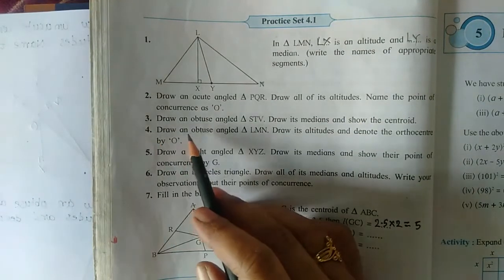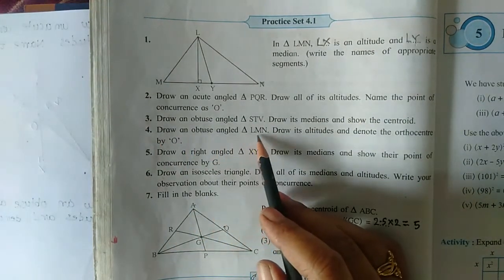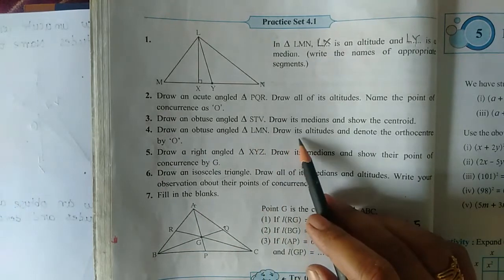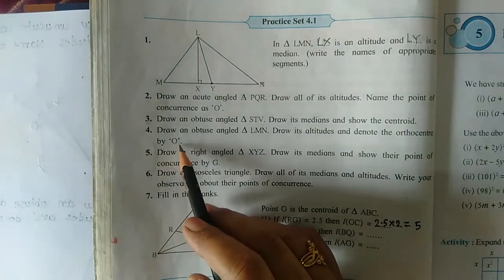Now the next question, fourth question: draw an obtuse angled triangle LMN, draw its altitudes, and denote the orthocenter by O.